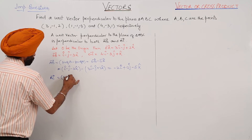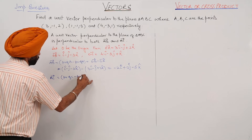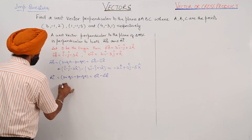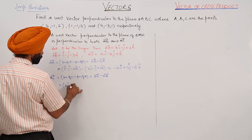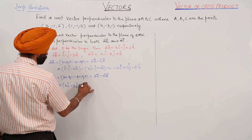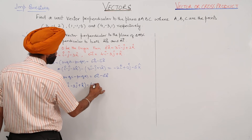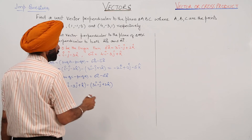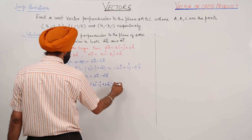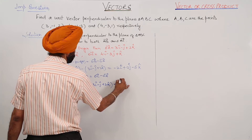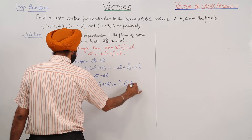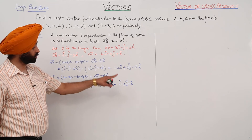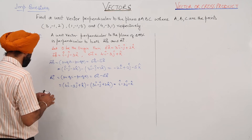Vector AC is equal to the position vector of C minus the position vector of A, which equals vector OC minus vector OA. This gives us 4i cap minus 3j cap plus k cap, minus 3i cap minus j cap plus 2k cap, which becomes i cap minus 2j cap minus k cap.